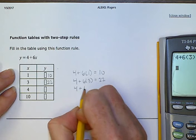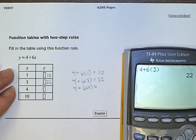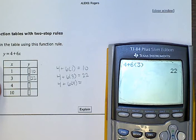For the next one, now we are putting 4 in for x. So let's look at this on the calculator. 4 plus 6 times 4. That gives me 28.